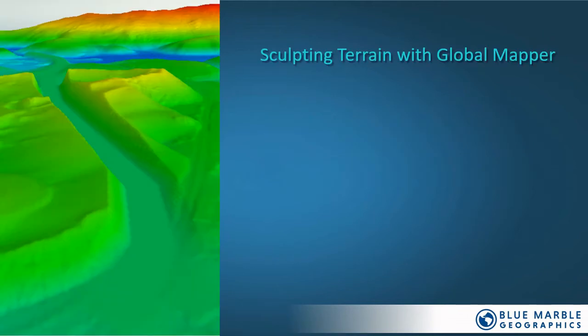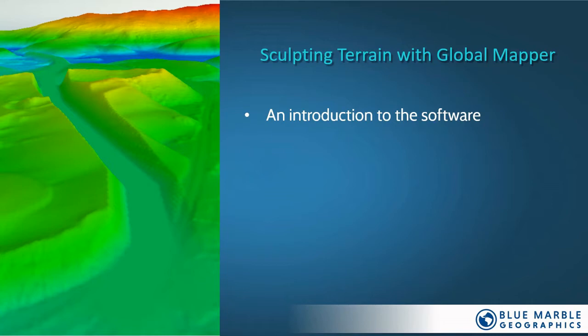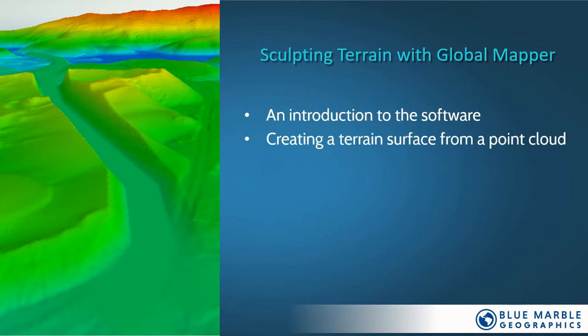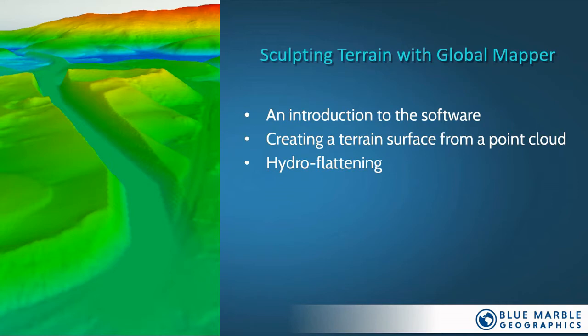So a quick look at the agenda for our brief presentation. We're going to start by introducing the software at a high level, for those of you not familiar with Global Mapper. Then we're going to specifically look at creating terrain data from a point cloud using LiDAR data. As a supplementary component, we're also going to initiate a process called hydroflattening, where we take the elevations in accompanying vector features — polygons and lines — and override the elevations to burn a modified surface. Essentially, this is sculpting terrain based on the elevation in existing features.